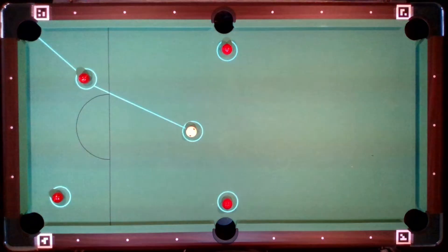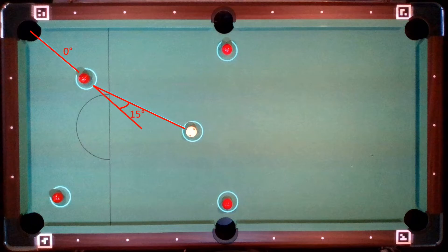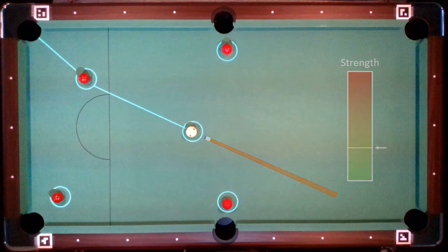The difficulty of each shot is assessed. What is important here is the distance that the balls travel, the angle at which the ball is hit, and the required strength. The simplest is then suggested to the player.